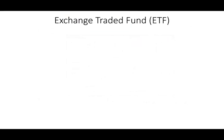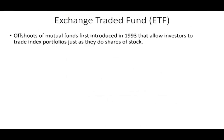So let's talk about exchange traded funds. Exchange traded funds are an offshoot of mutual funds. They were first introduced in 1993, and they allowed investors to trade index portfolios just as they trade stocks. Simply put, think of an ETF as a stock — you can buy it and sell it on a regular basis. However, those ETFs track some index.